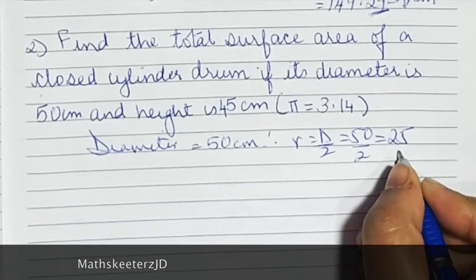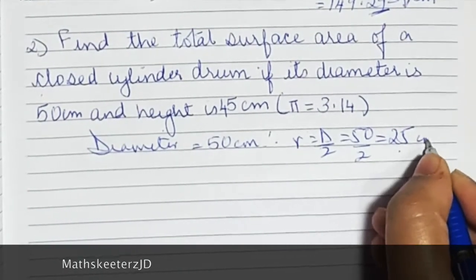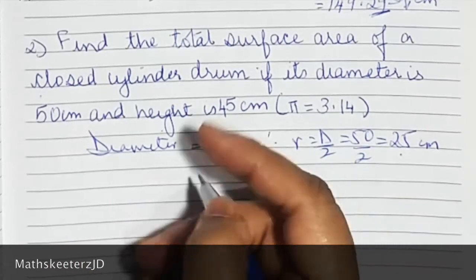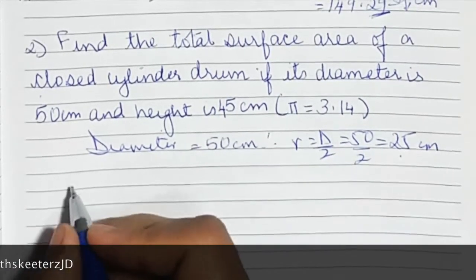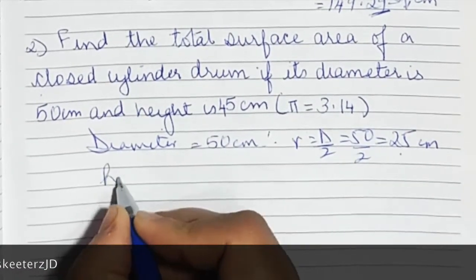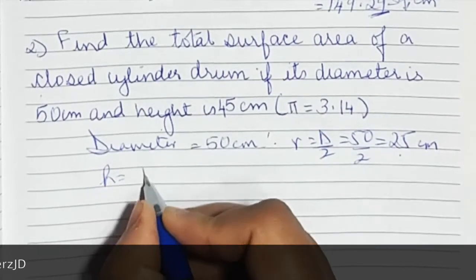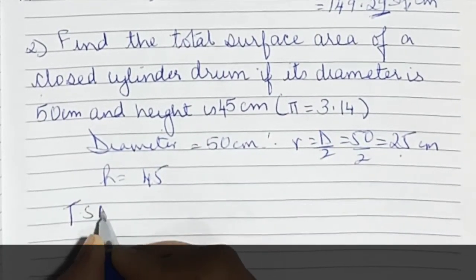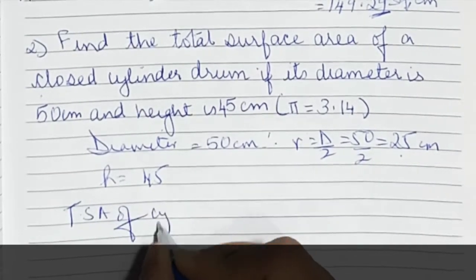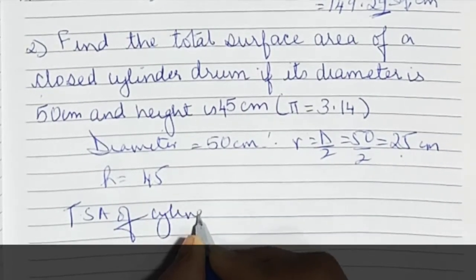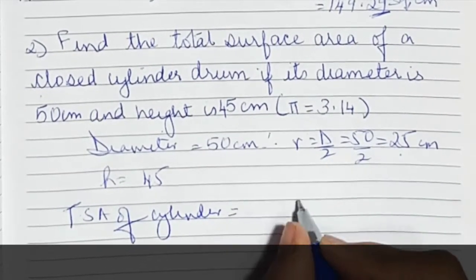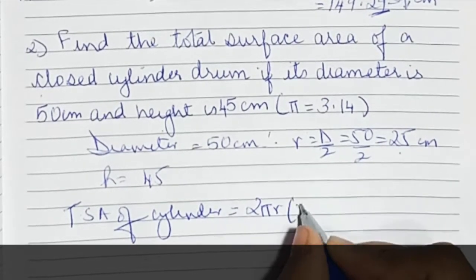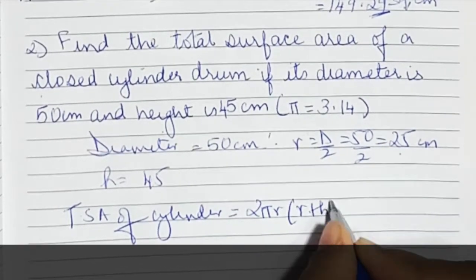So we know the radius is 25 centimetres and height given to us is 45. We have to find the total surface area. The formula for total surface area of a cylinder is 2πr(r + h).